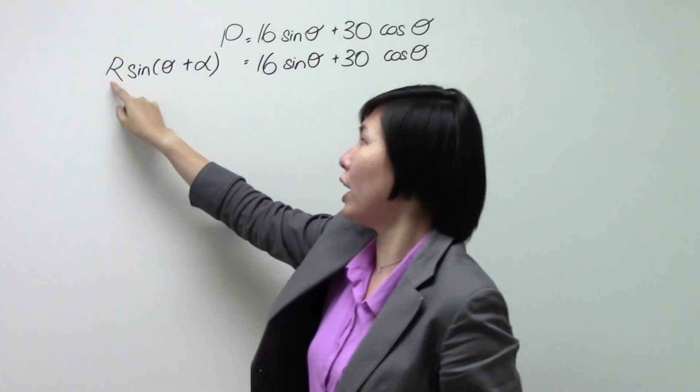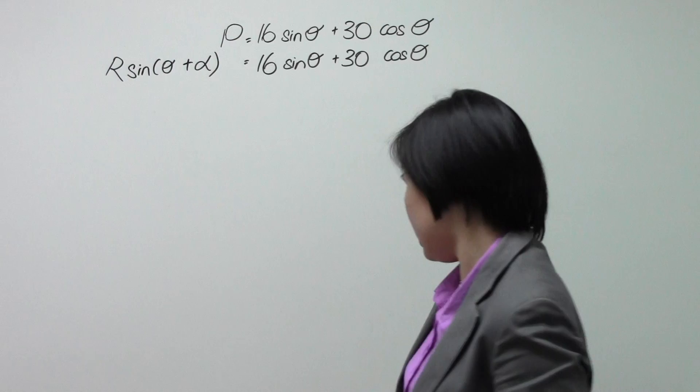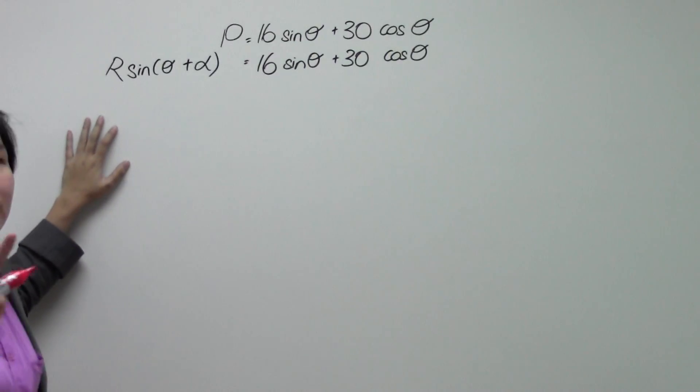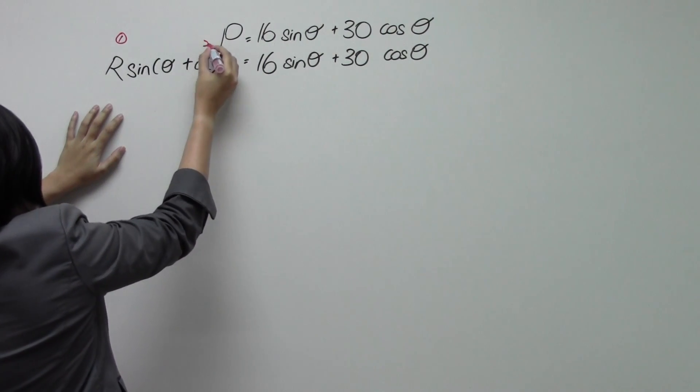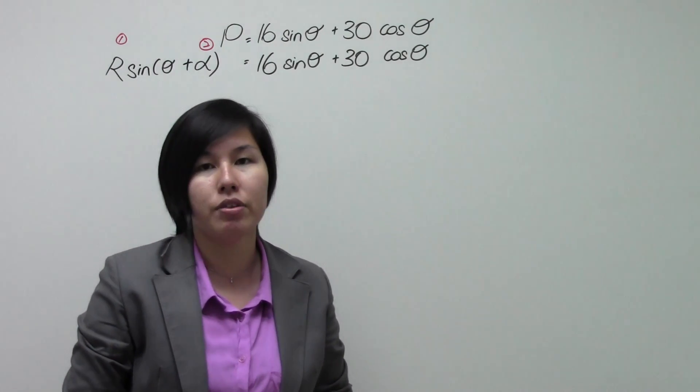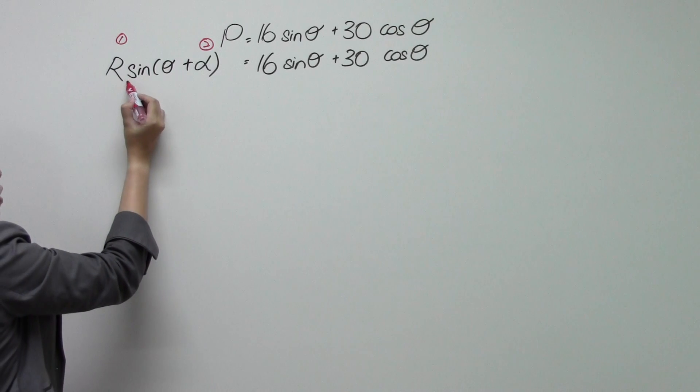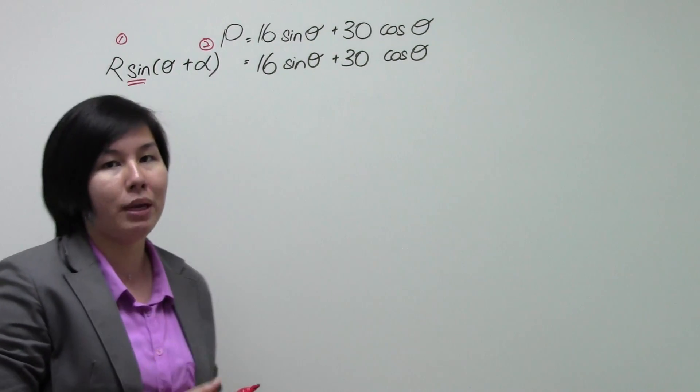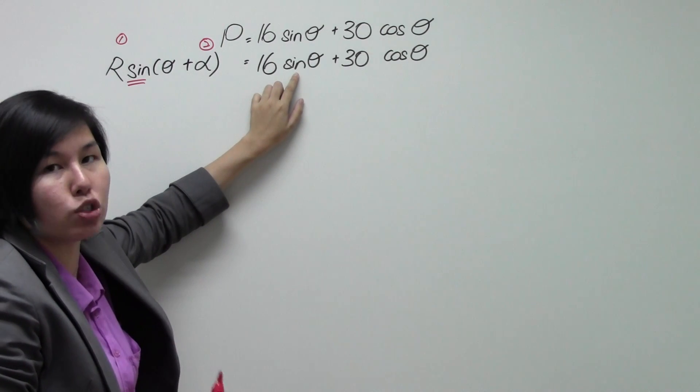The question specifically wants us to find R sine bracket theta plus alpha. So this is the R formula and in R formula, there are two things that you need to find. First, R and the second, alpha. Now there's one more thing that I think all of you must pay attention to. That is, if the question asks for R sine, it is your duty to make sure that the sine term comes first. This is extremely important.